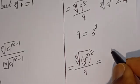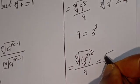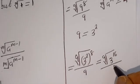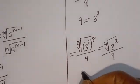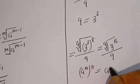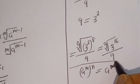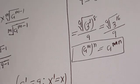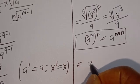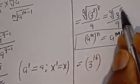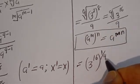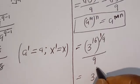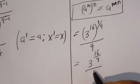Then this is equal to — using the rule that if you have a to the power of m to the power of n, this is equal to a to the power of m times n — we get 3 to the power of 16 to the power of 1 divided by 9, all divided by 9.